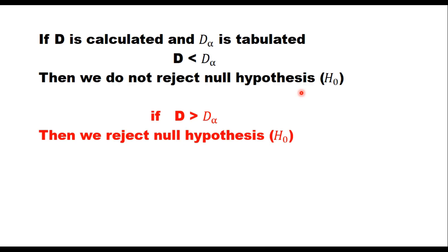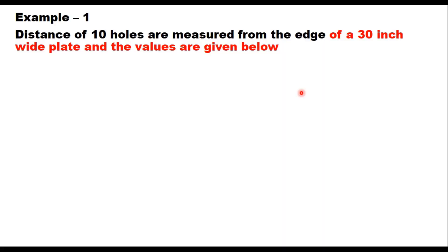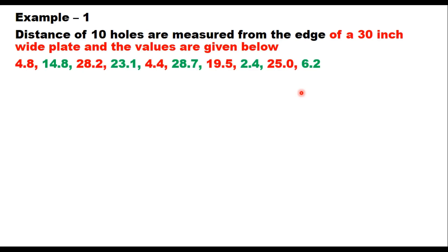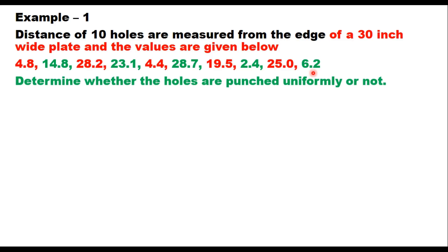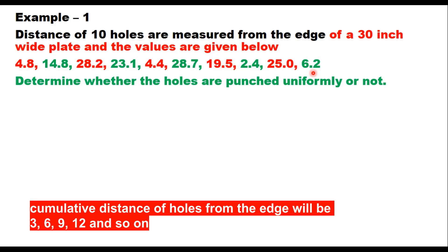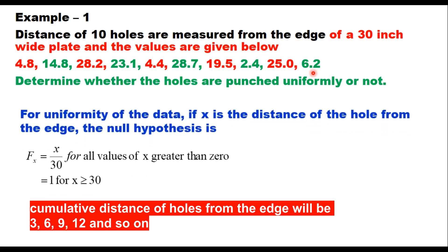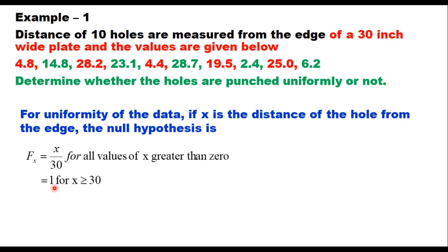Example 1: distances of 10 holes are measured from the edge of a 30-inch wide plate. The question is to determine whether these holes are punched uniformly or not. For uniform distribution, every hole must be at 3-inch intervals. For uniformity, if x is the distance of the hole from the edge, then the null hypothesis is that F(x) = x/30 for all values of x greater than 0, and equals 1 when x is greater than or equal to 30. That is the CDF of a uniform distribution.